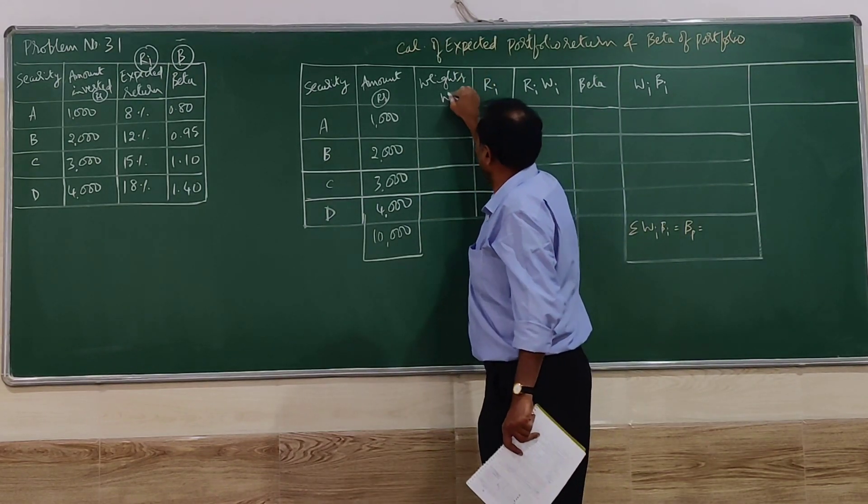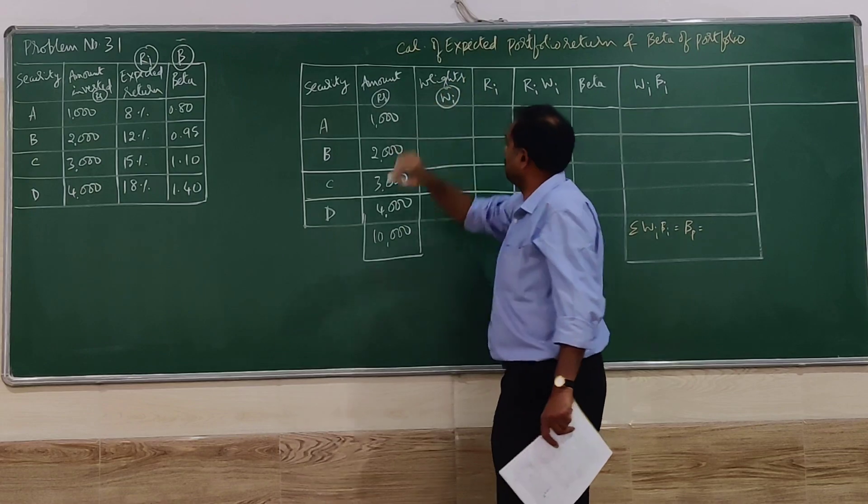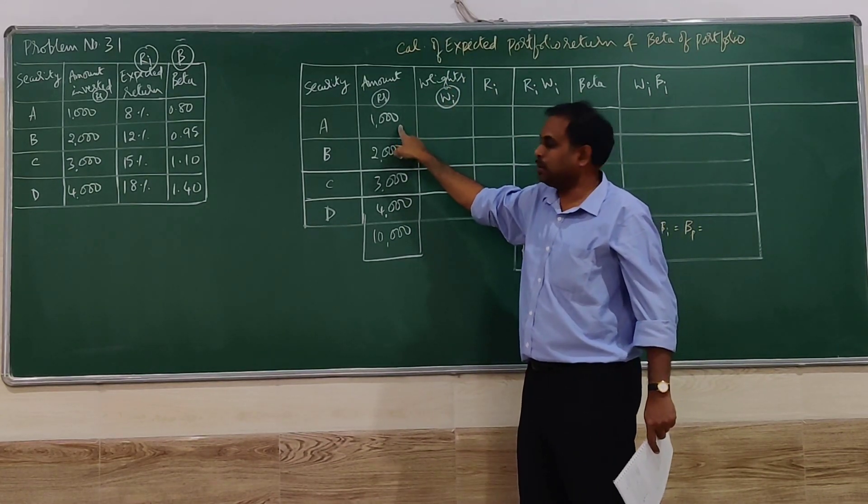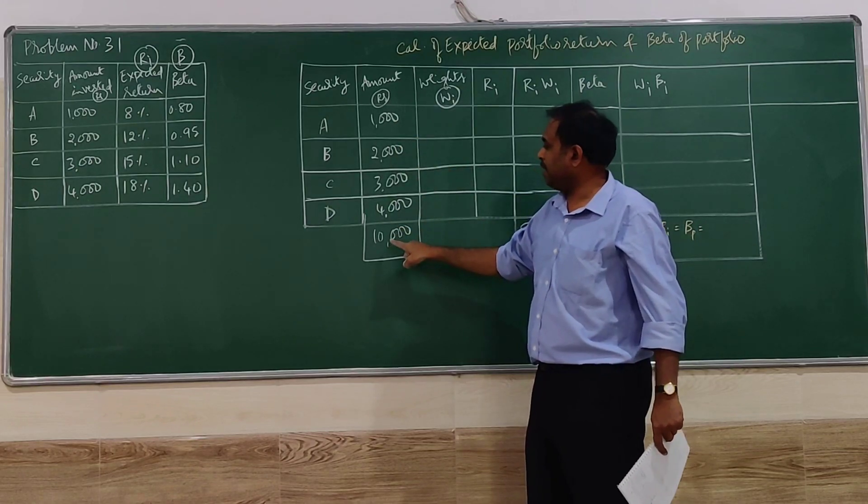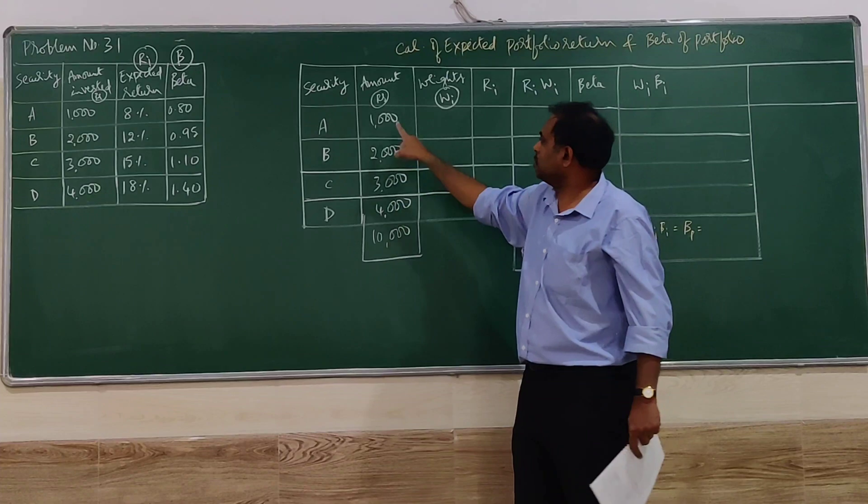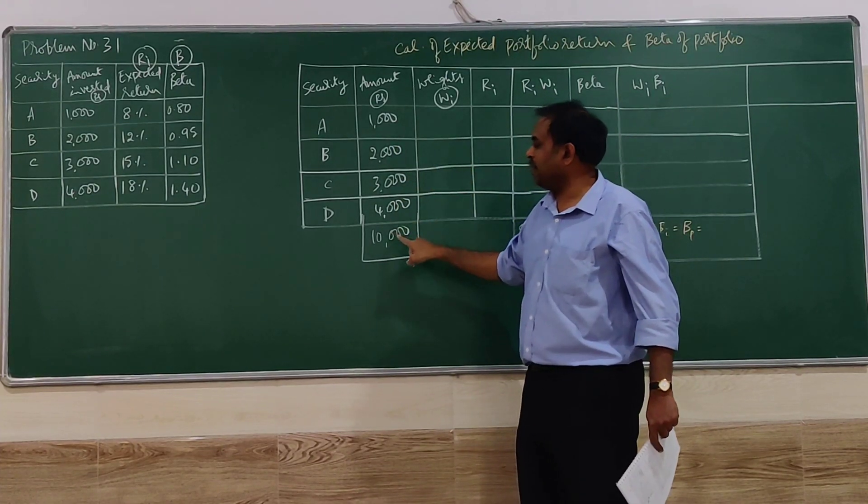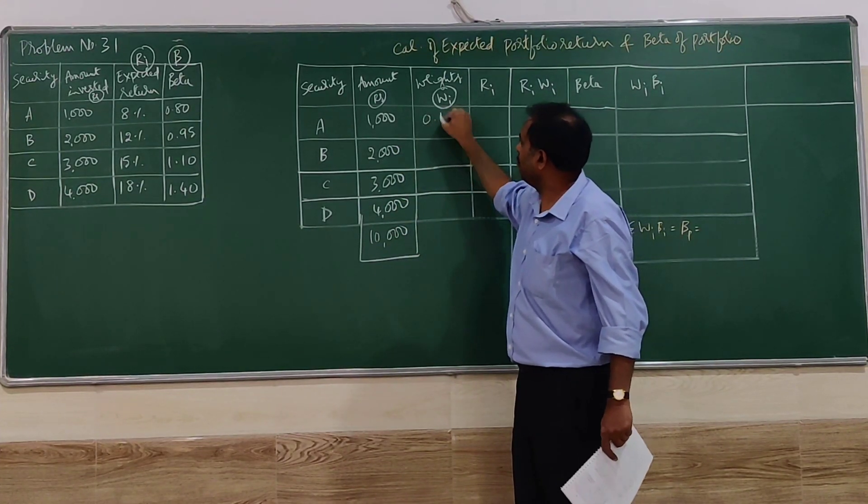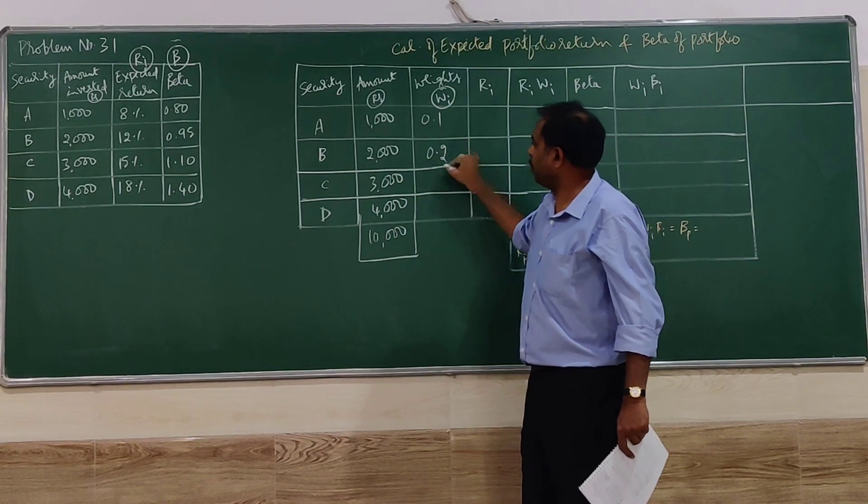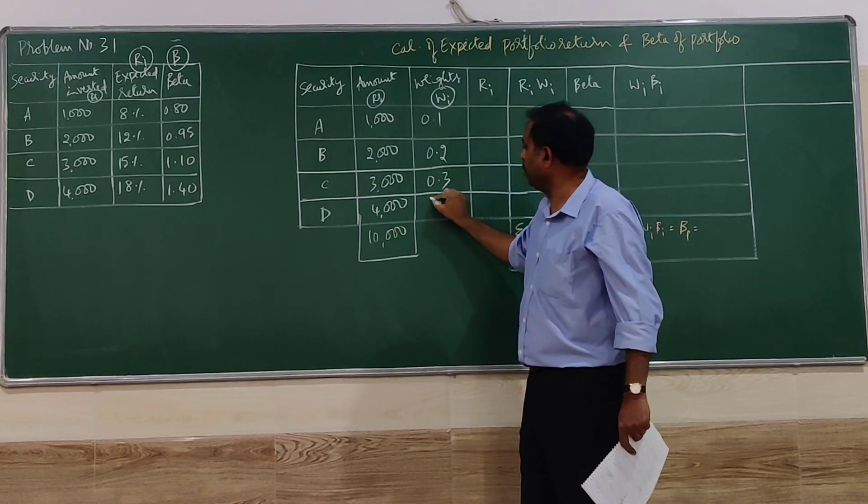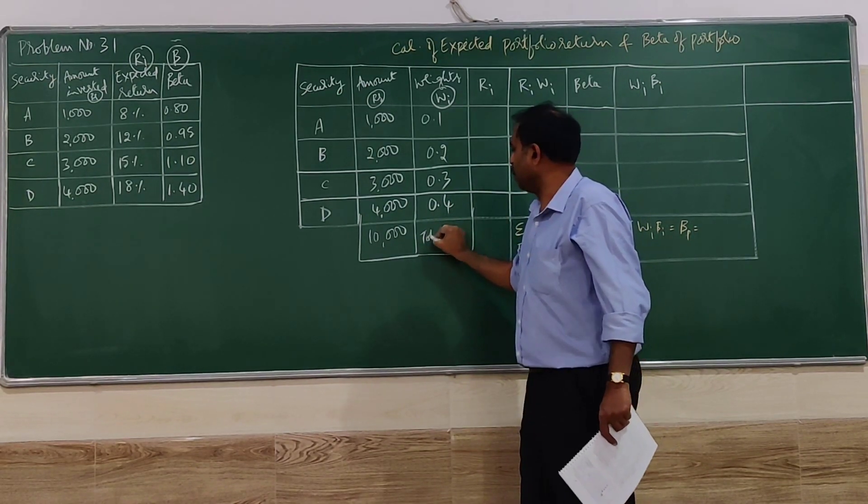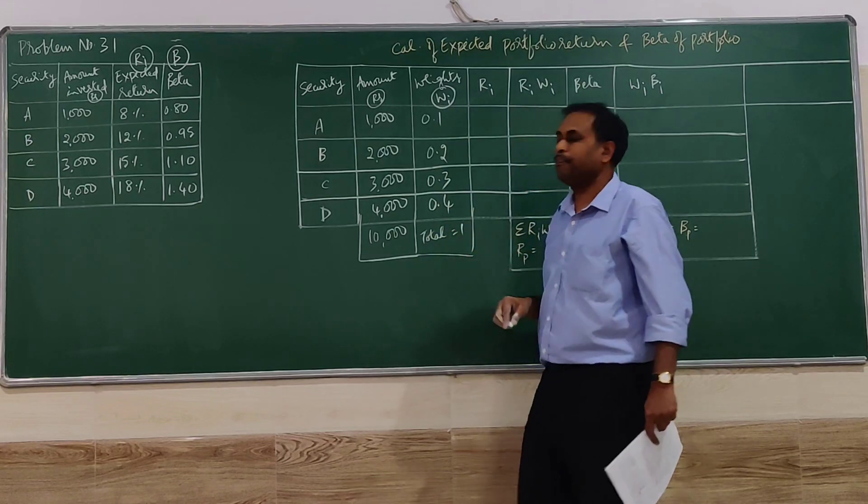For this, first we have to find out the weights. Weights are denoted as w. How to find the weights? One thousand rupees is there, how much is the percentage of ten thousand? So one thousand divided by ten thousand is 0.1, two thousand divided by ten thousand is 0.2, like that we have to do. The total of weights should be equal to one.